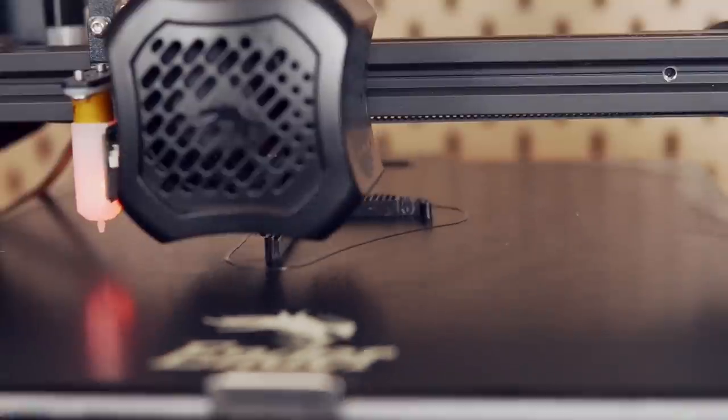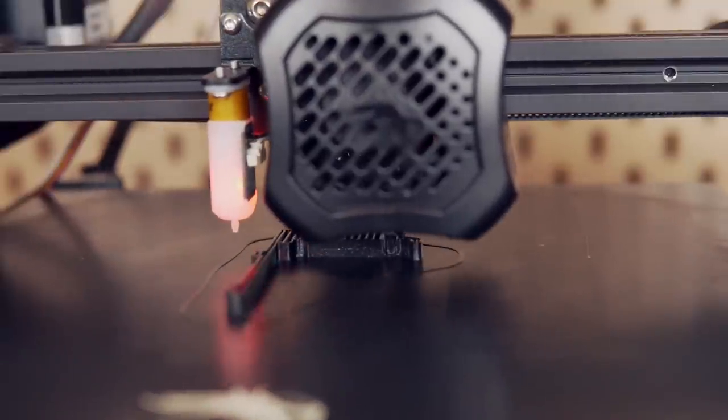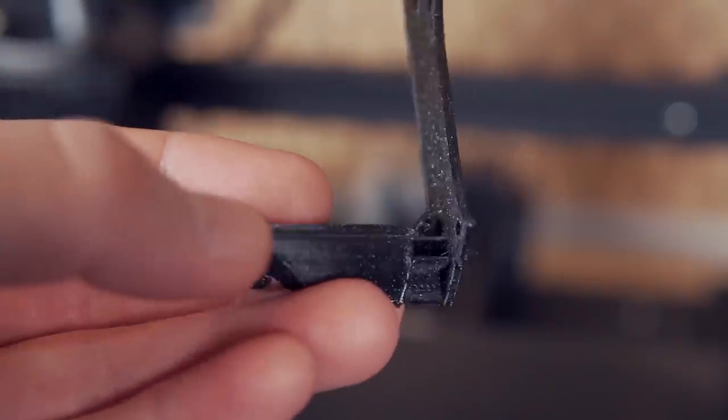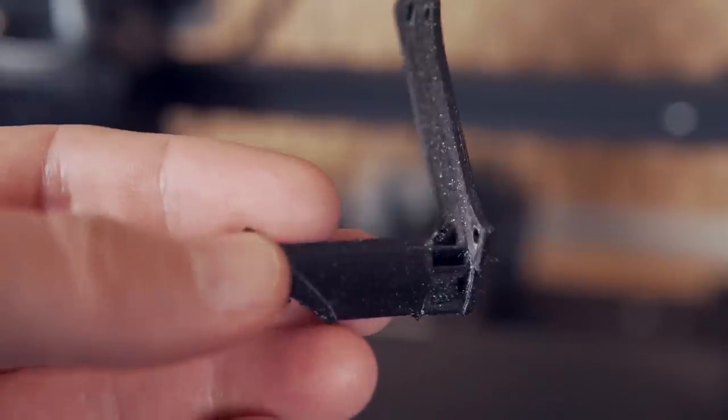Ideally ABS is going to be a better option, but I'm starting off with PETG, and if for some reason it does end up warping or degrading over time I'll either reprint it in ABS or just print out a new one.